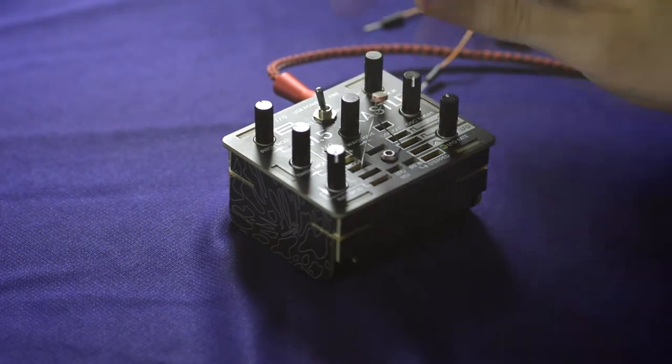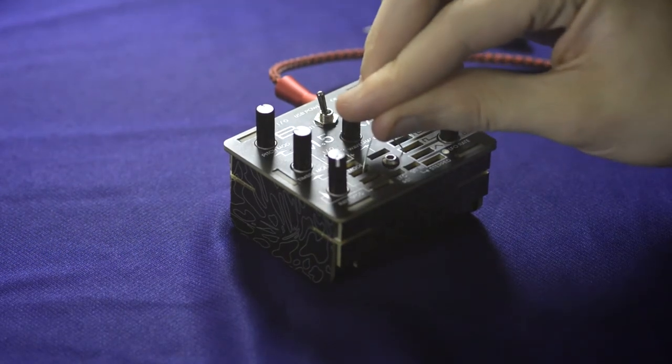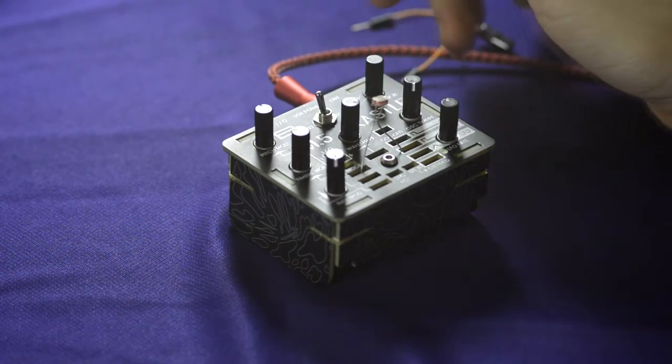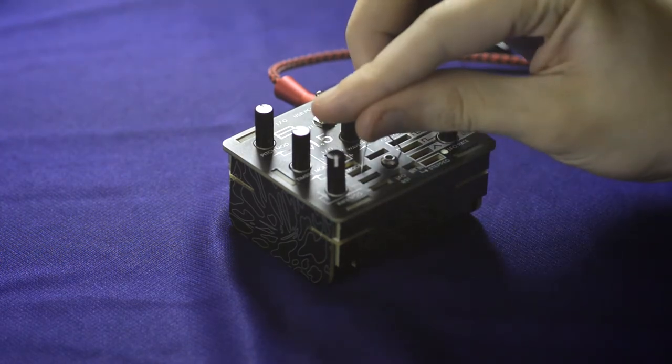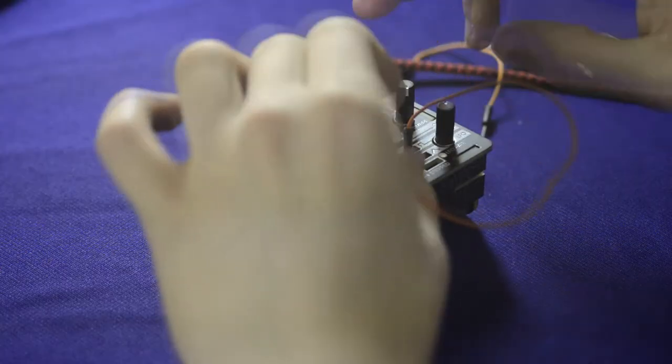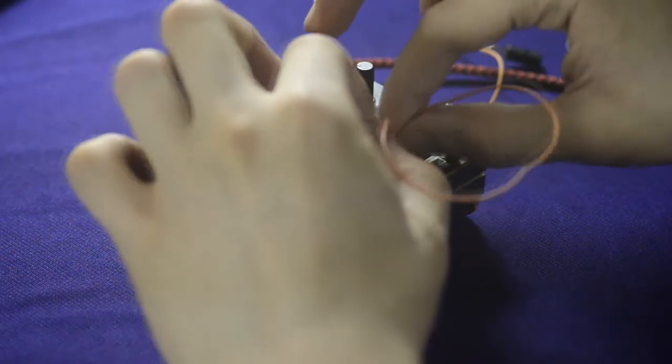Or you can use a normal resistor to act as a floating attenuator, fixed drop between your modulator and your destination.